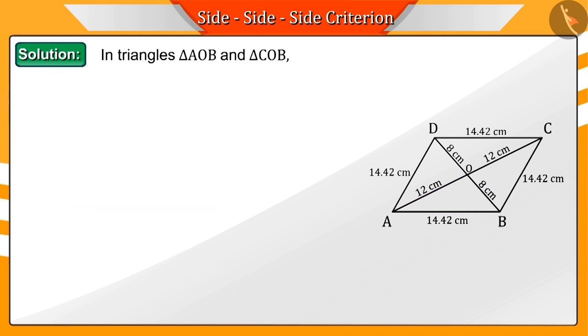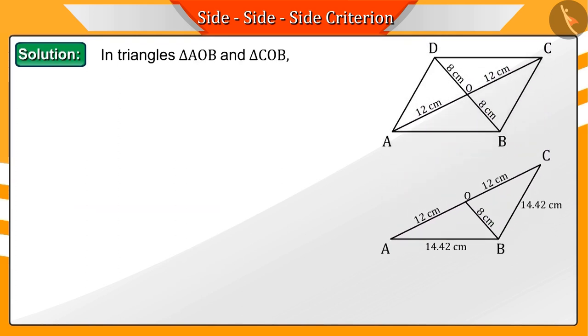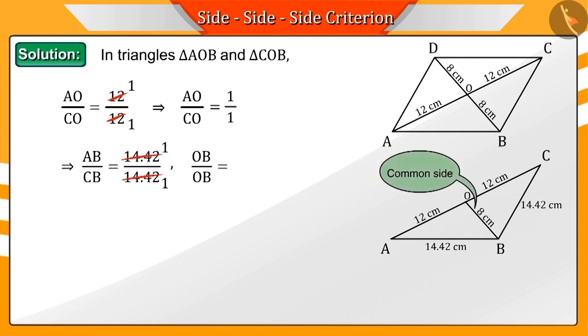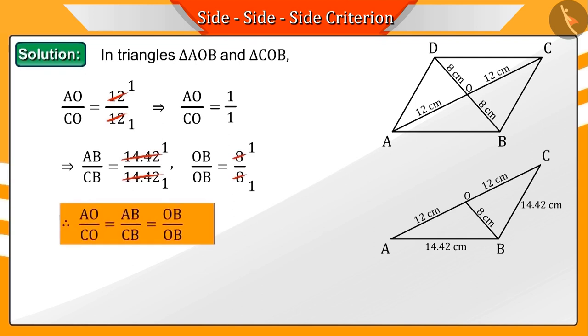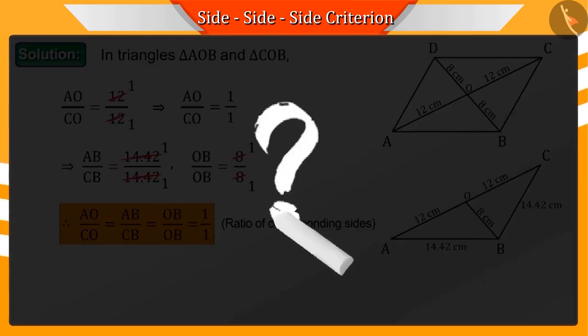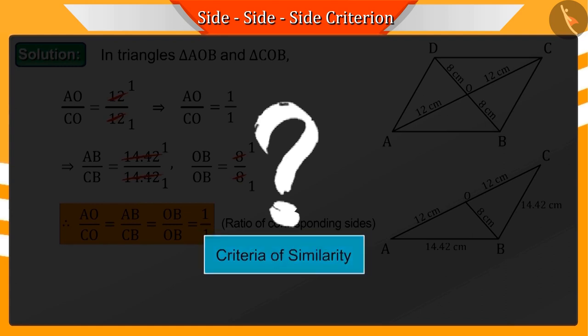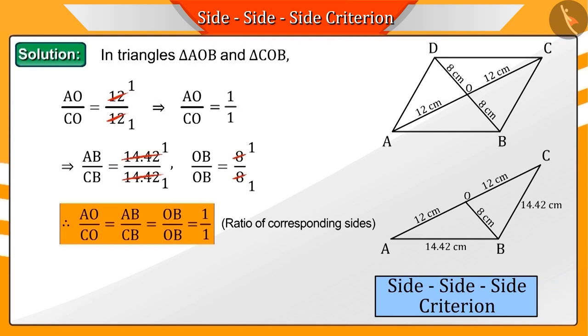Now, let's discuss the triangles AOB and COB. From these two triangles, we see that the ratio of corresponding sides AO by CO, AB by CB and OB, which is the common side, are equal. Can you tell which criteria of similarity is shown by this? Correct. This represents the SSS criteria. Therefore, we can say that triangle AOB and COB are similar.